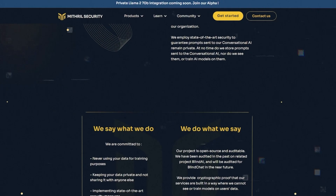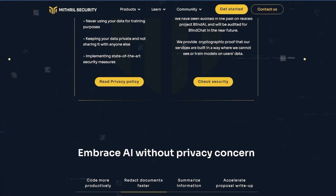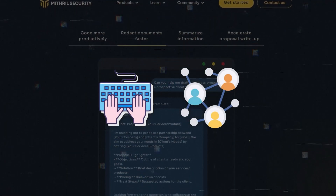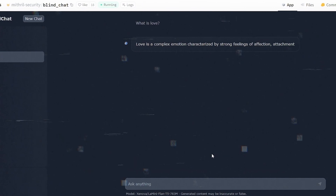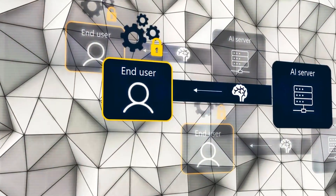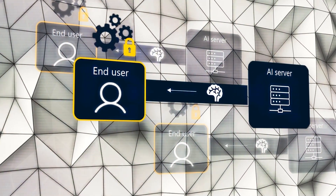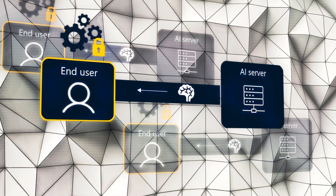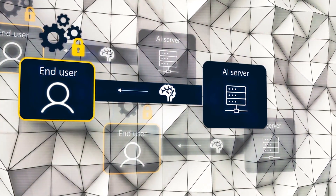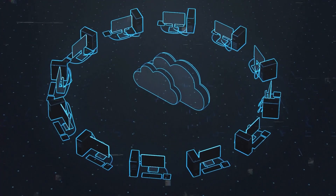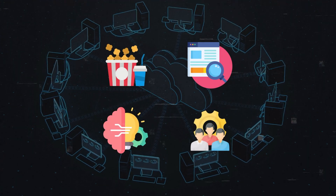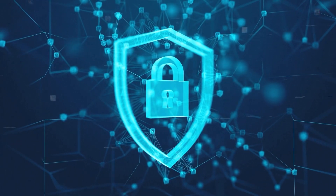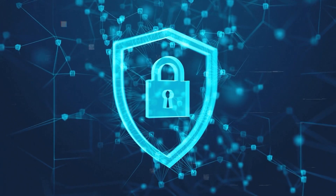The BlindChat website has a user-friendly interface, letting you type and communicate with the model. There's an option to process your input either directly on your device or on a remote system. If you use the on-device option, the model processes your messages without sending them to a remote server, ensuring data privacy. You can utilize it for multiple purposes, whether for learning, entertainment, research, or professional tasks, all while ensuring your data remains confidential and secure.